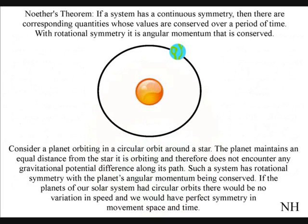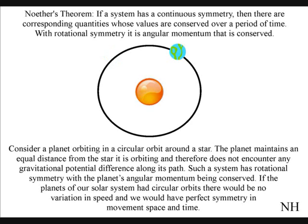Rotational symmetry is easier to visualize. Consider an object orbiting in a circular orbit around a star. The object maintains an equal distance from the star it is orbiting, and therefore does not encounter any gravitational potential difference along its path. Such a system has rotational symmetry, with the object's angular momentum being conserved.